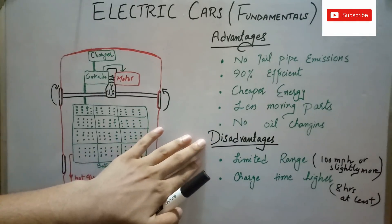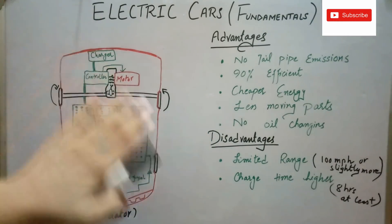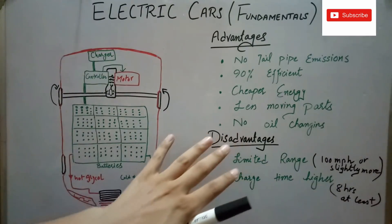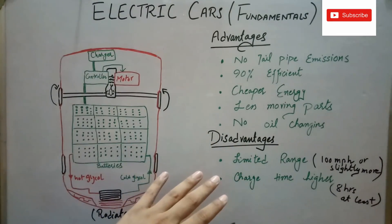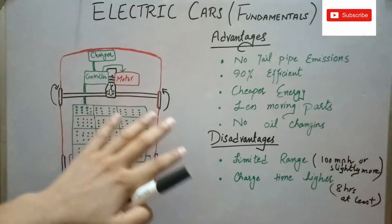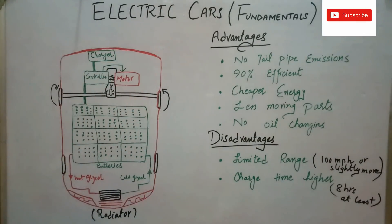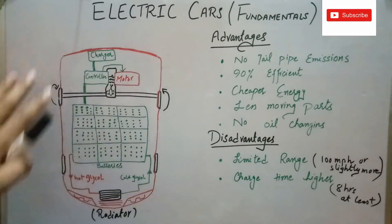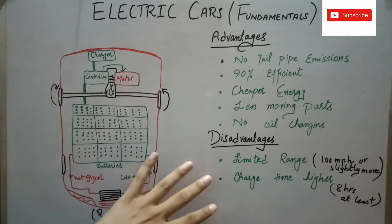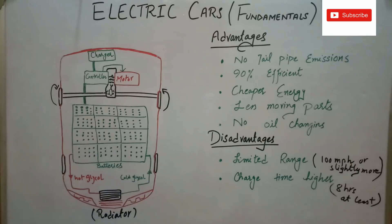So on the other hand, the disadvantages include: electric cars have limited driving range, usually 100 miles or slightly greater per charge; and the charging times for the batteries are very high, it takes at least 8 hours to recharge an electric car. But the technology is evolving, so we could expect greater things with electric cars in the future.